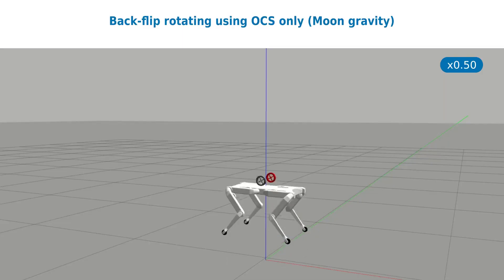Having in mind possible space applications, we show that flywheels can be exploited in lunar gravity to complete a backflip on the spot, relieving the effort on the legs, that are used only to achieve the vertical motion.